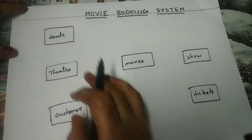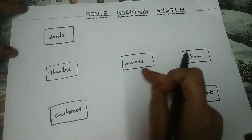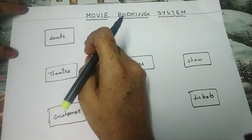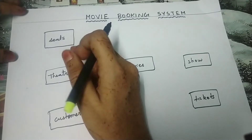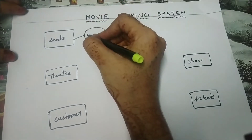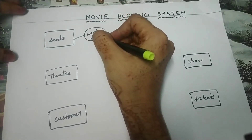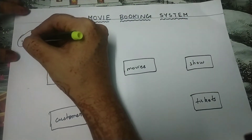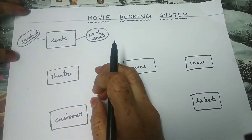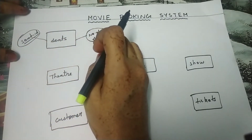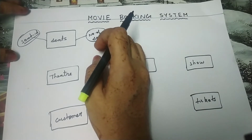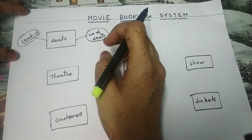Now we have to write the corresponding attributes to each and every single entity. An attribute is nothing but a characteristic of an entity, and attributes must be written inside an oval shape. The characteristics of seat are: total number of seats, and seat ID. We must underline seat ID because it is a primary key — every single seat will have a unique ID and no two seat IDs will match.